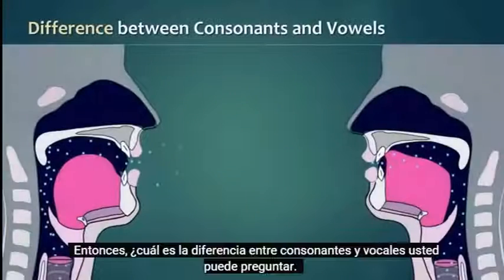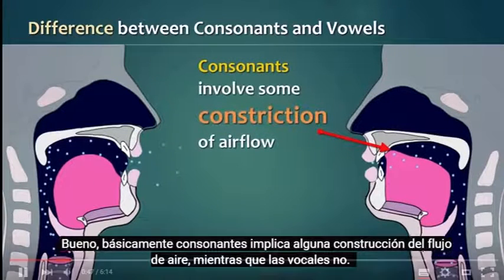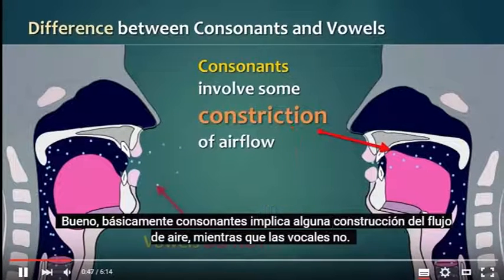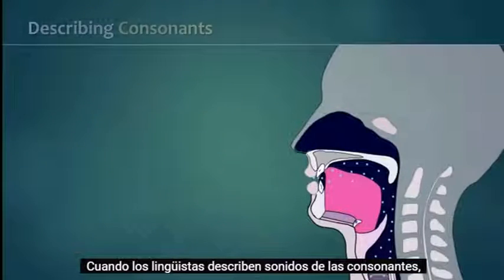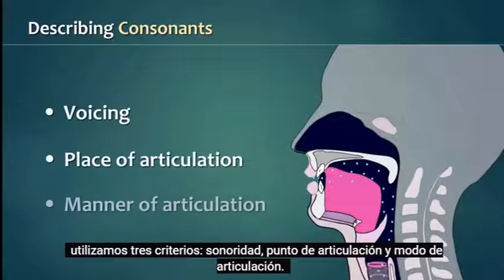What's the difference between consonants and vowels, you might ask? Well, basically, consonants involve some constriction of airflow, whereas vowels do not. When linguists describe consonant sounds, we use three criteria: voicing, place of articulation, and manner of articulation.